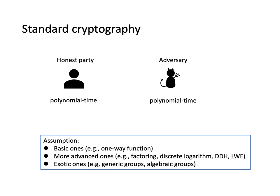For cryptographic schemes, we usually require that an honest party can run a scheme in polynomial time and the scheme can be secured against polynomial time adversaries. By now, there have been a great deal of works constructing cryptographic schemes that are secure based on one-way functions, factoring, discrete logarithms, DDH, LWE, or even the existence of generic groups and algebraic groups.